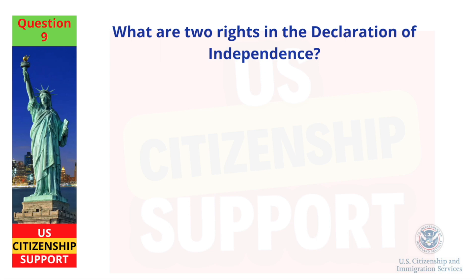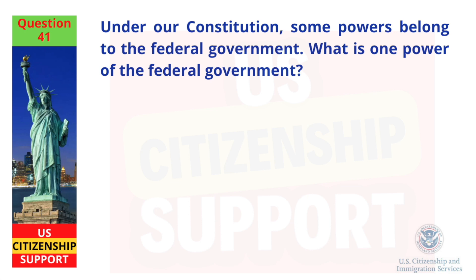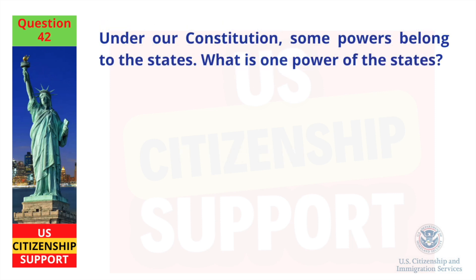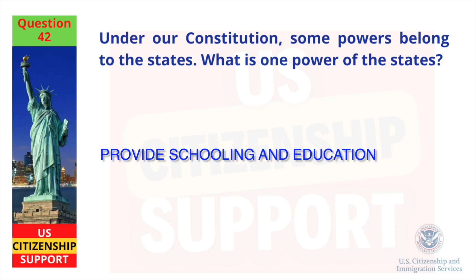What are two rights in the Declaration of Independence? Life and liberty. Under our Constitution, some powers belong to the federal government. What is one power of the federal government? To print money. Under our Constitution, some powers belong to the states. What is one power of the states? Provide schooling and education.